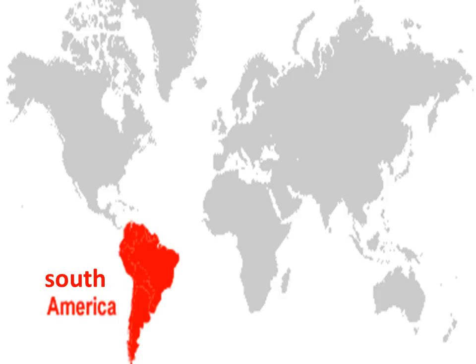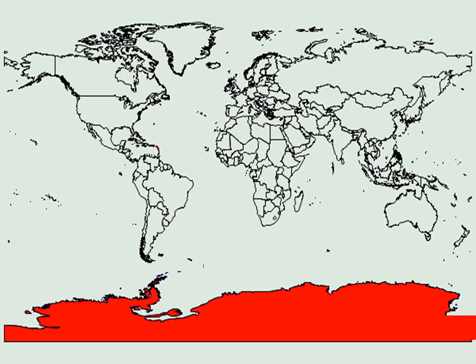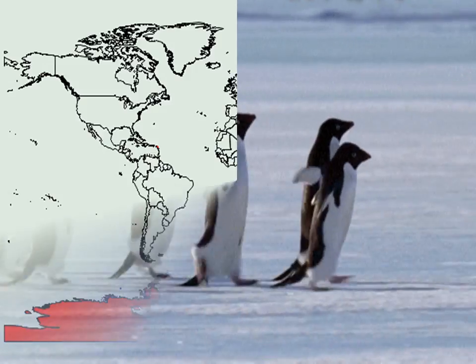Next comes the southernmost continent. Yes, it is Antarctica. The South Pole is located in this continent. It is the coldest continent in the world and is completely covered with ice. But the best part is that you can see penguins here.